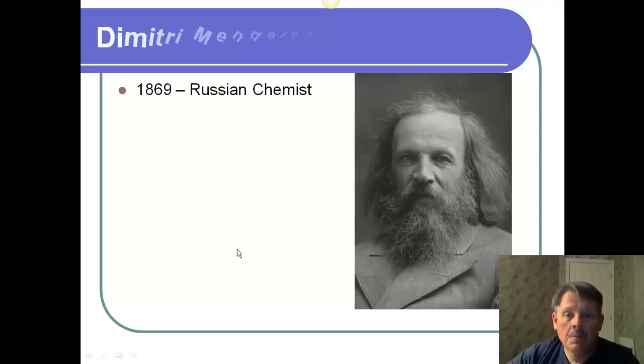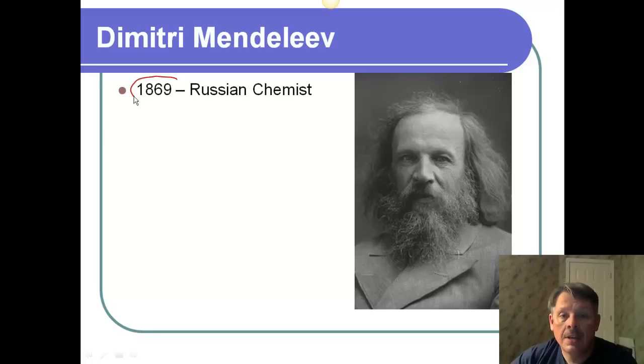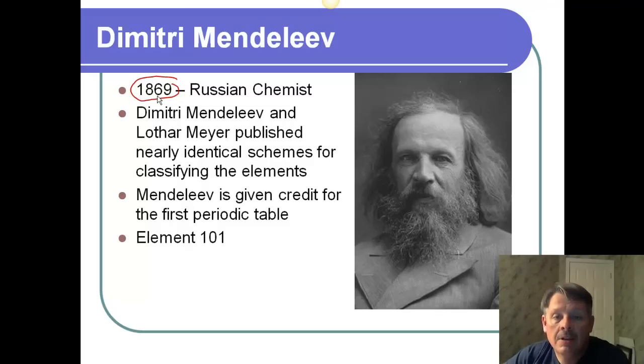Well, Dmitri Mendeleev came along, and you'll notice that he's only four years later, 1869, compared to Newlands, and he was a Russian chemist. And all the chemists talked to each other, and they all tried to build on the shoulders of the people who went before them. Now, Mendeleev and another guy named Lothar Meyer published nearly identical schemes for classifying the elements. But, nobody remembers Lothar Meyer. Everybody remembers Mendeleev. And he's given credit for the first periodic table, and in fact, if you look at element 101, you'll notice it's Mendelevium. It is named after him. So, he got credit for it. Why? Because, he was first, frankly. Explained it a little bit better. Got out there first. Didn't have to be much, a day or two. But, that was enough to get him credit.